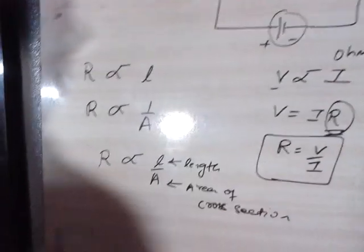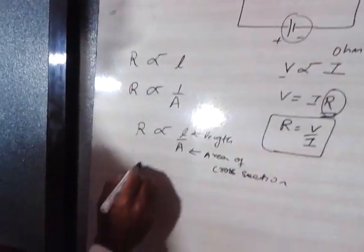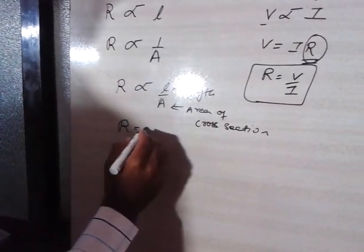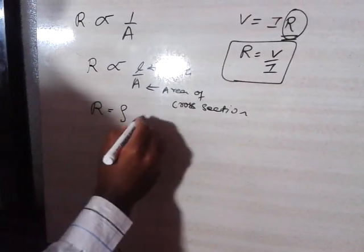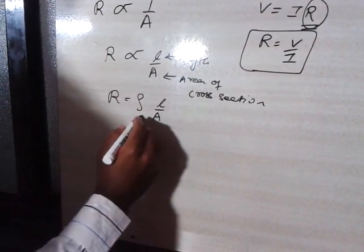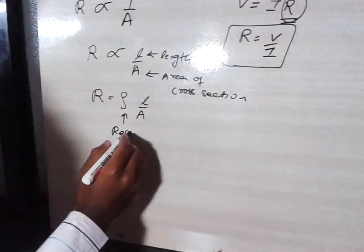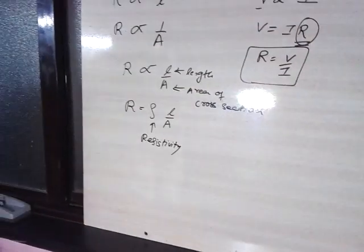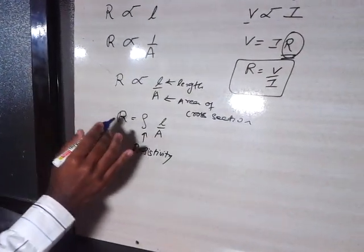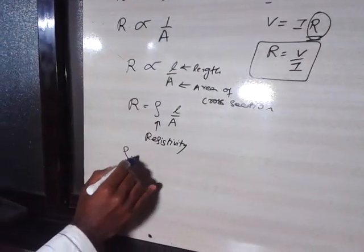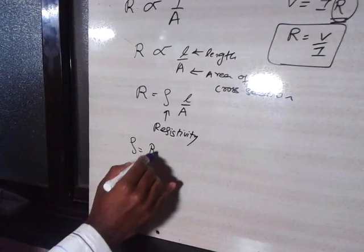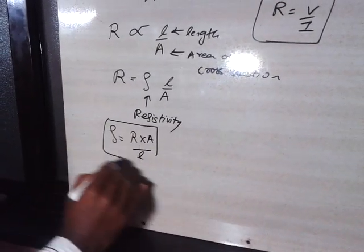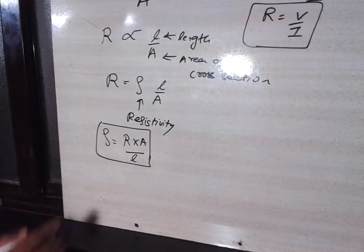Now, if we remove the proportionality sign, a constant term appears again, and that constant term — rho (ρ) — is called resistivity. So the full formula becomes R = ρL/A, which means resistivity ρ = RA/L. This gives you the value of resistivity of the wire.